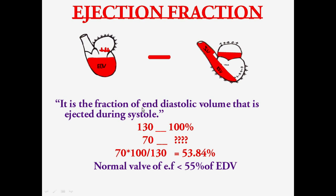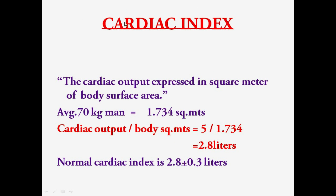The next topic is ejection fraction. Ejection fraction is the fraction of end diastolic volume that is ejected during systole — in other words, stroke volume expressed as a percentage. EDV is 130 ml, which we consider as 100%. Stroke volume is 70 ml. So: 70 × 100 ÷ 130 = 53.84%. The normal ejection fraction is approximately 55% of EDV. Ejection fraction is used to assess ventricular contractility, that is ventricular function.